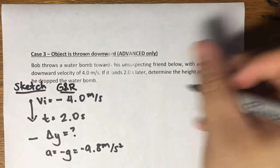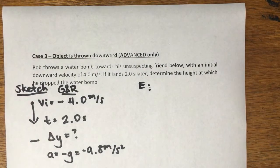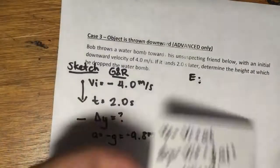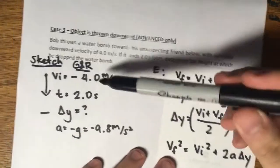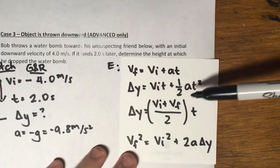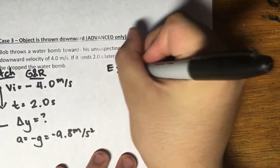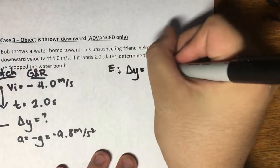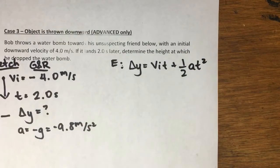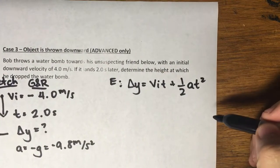What equation can we use that covers all of these? Let's look at our equation list again. We're looking at vi, t, delta y, and a. All of these are encompassed with the second equation. So let's try that: delta y is equal to vi·t plus one-half·a·t squared. We're looking for delta y, so we don't really need to rearrange it too much — we just need to plug in the values.